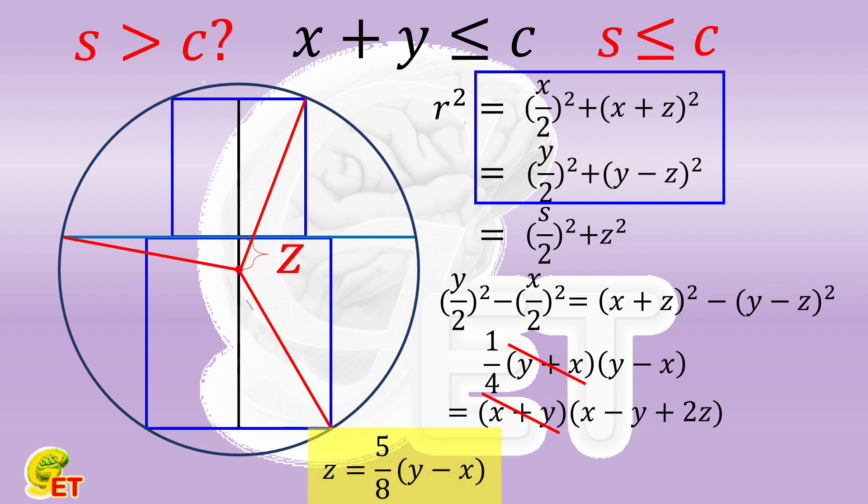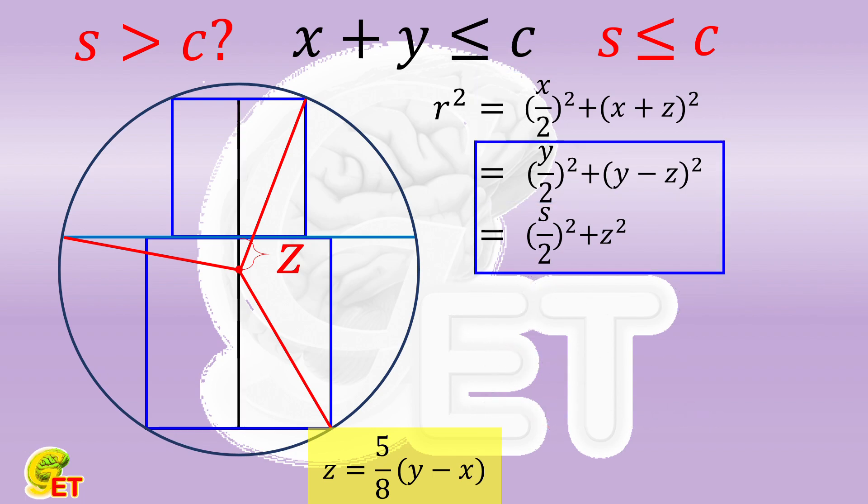Then we bring this z into the equation composed of the latter two expressions. And get that five fourths times x times y is equal to the square of half s. So s is equal to the square root of 5 times the geometric mean of x and y.